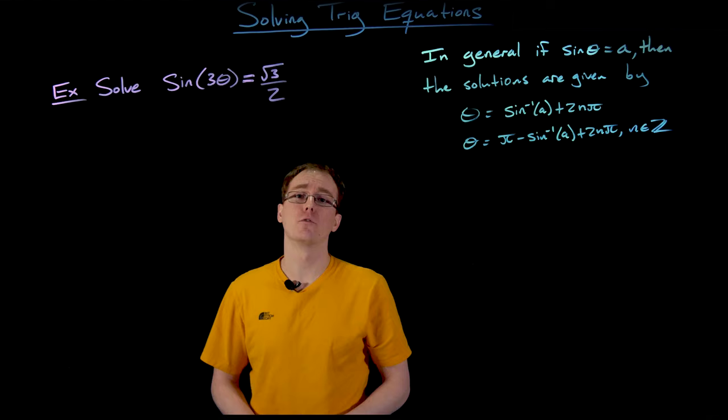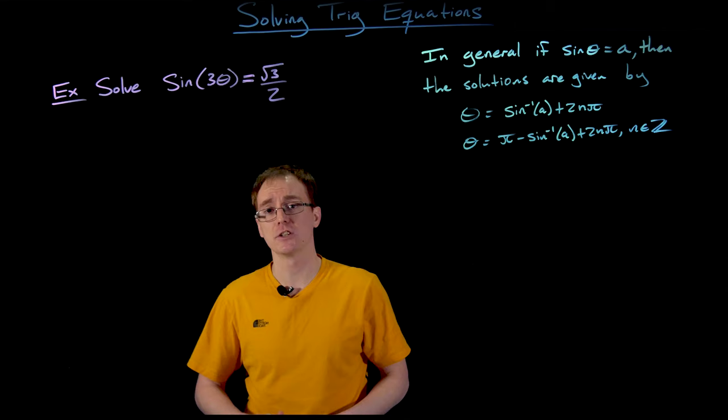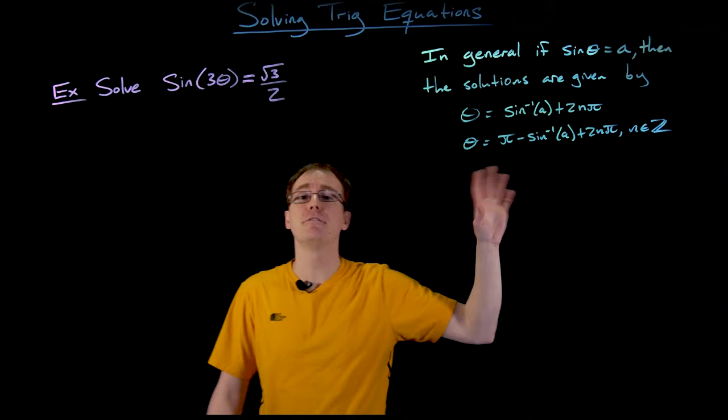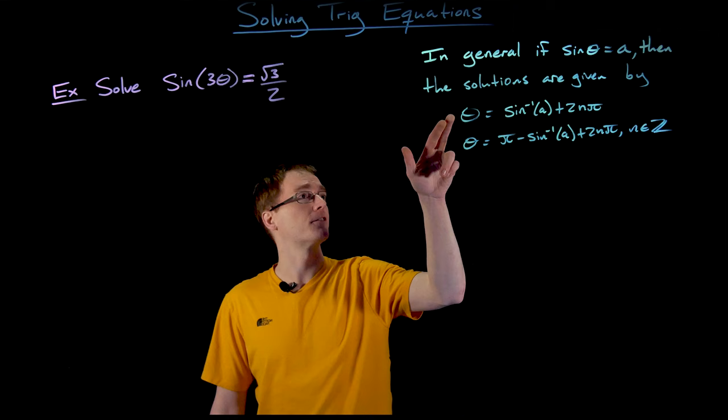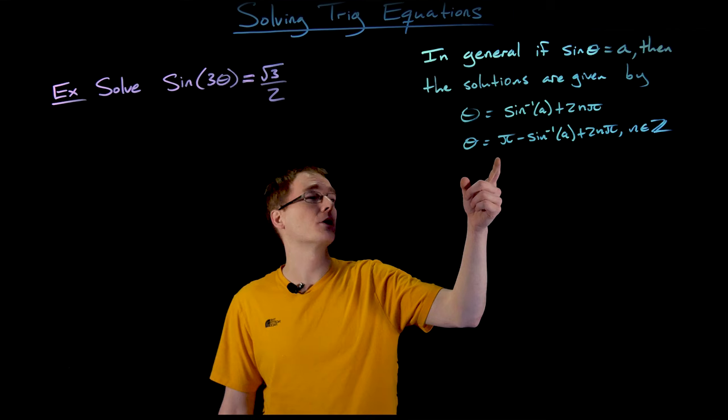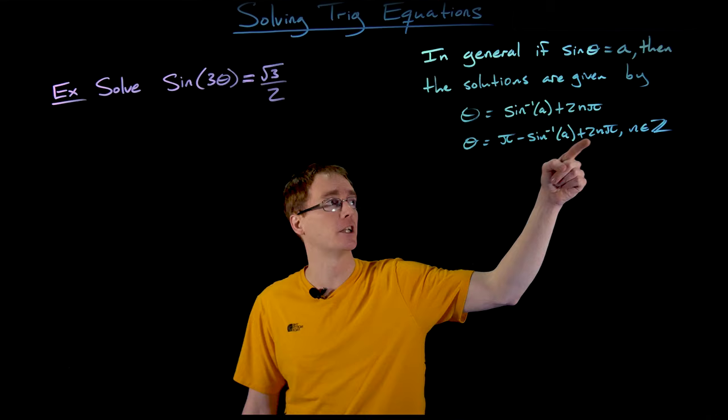In one of our earlier videos we discussed what the general solution to a basic sine equation is going to look like, and I've included our notes from that discussion up here in the upper right. In general, if we're trying to solve an equation of the form sine of theta equal to a constant a, then the infinitely many solutions are described by two equations. The first is theta equals sine inverse of a plus 2n pi, and the second is theta equals pi minus sine inverse of a, plus 2n pi.